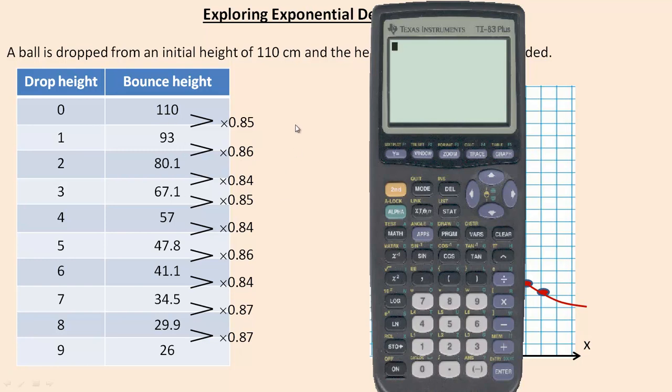If it was growth, then these numbers would be going up and the multiplying factor would be something over 1. We'll get into that in other tutorials.